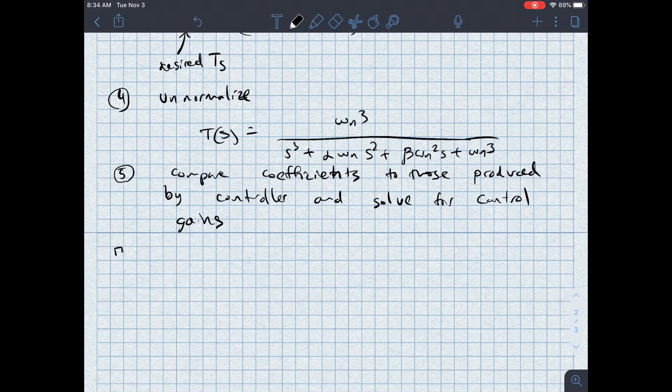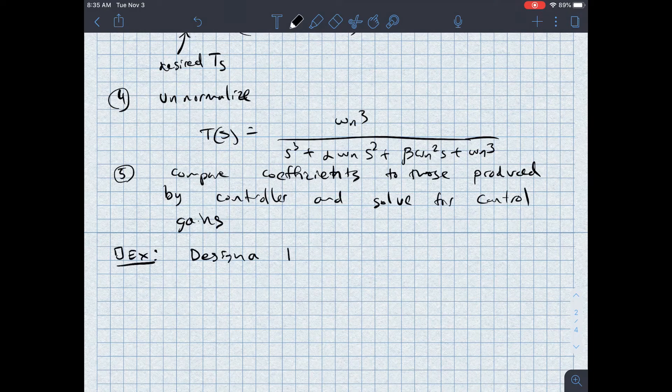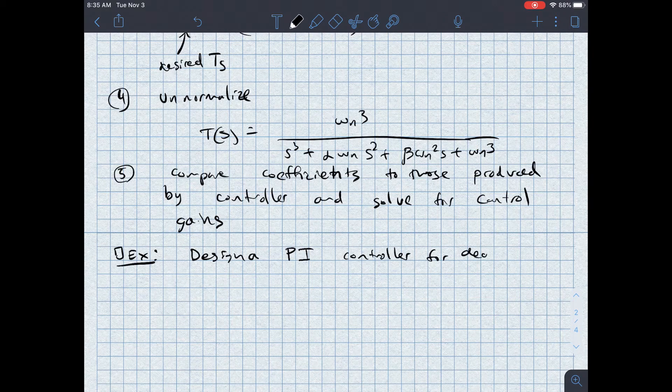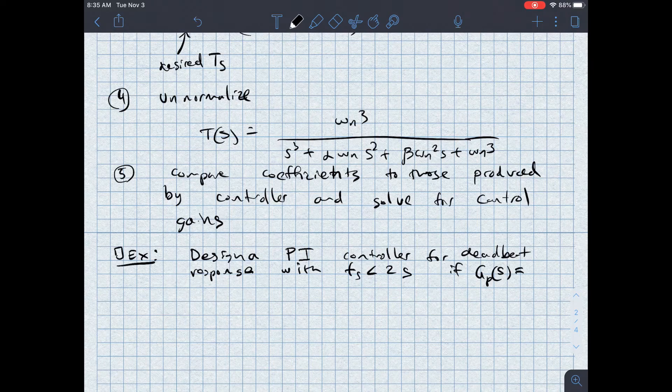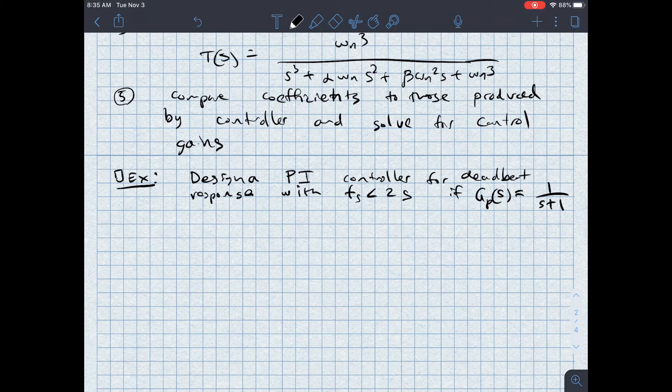To help us understand this better, I want to look at an example. I want you to design a proportional integral controller for deadbeat response with a settling time less than two seconds if the plant GP of S is one over S plus one.